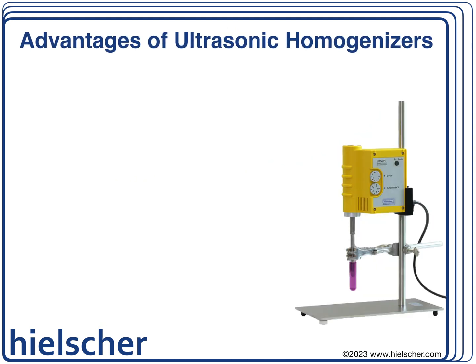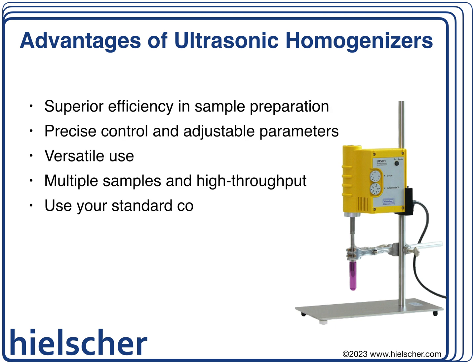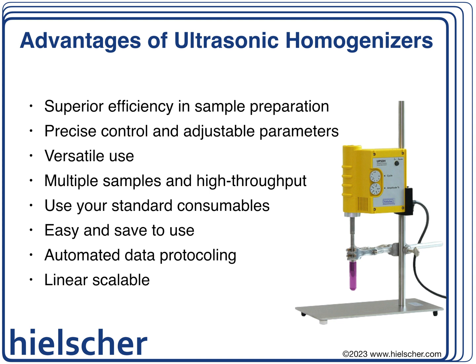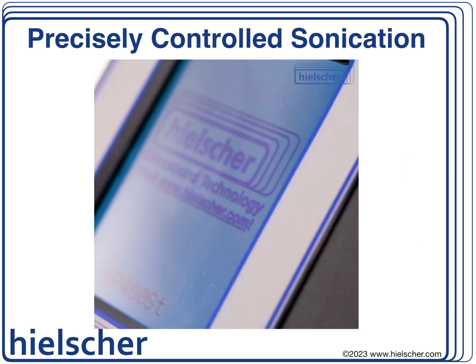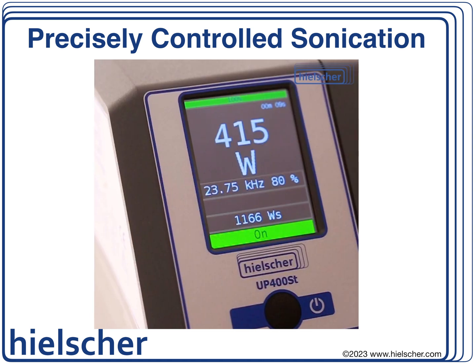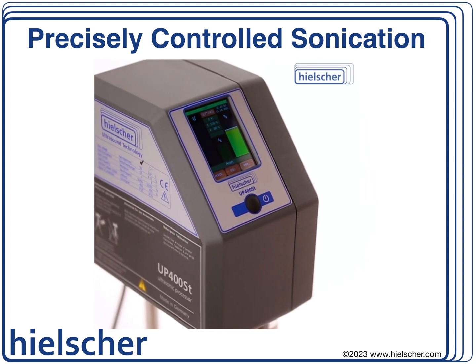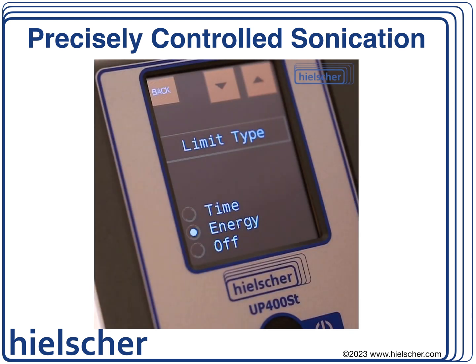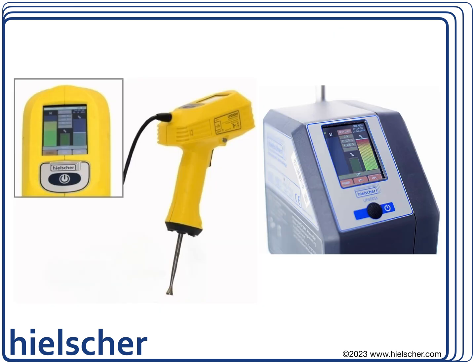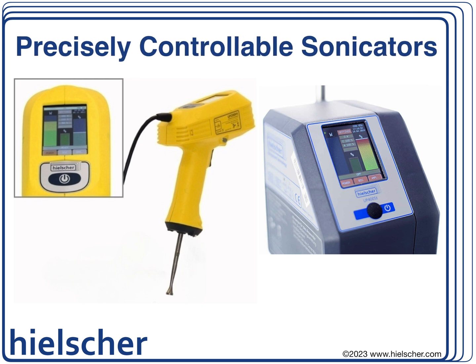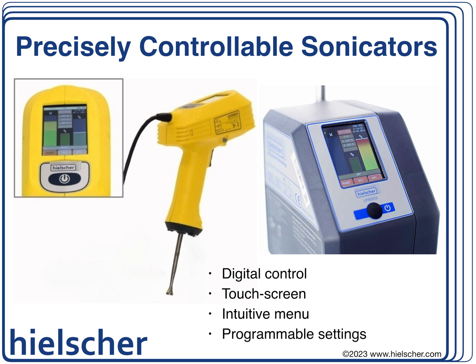In our exploration of sonicators, we've uncovered various models tailored to specific tasks in sample preparation. Ultrasonic tissue homogenizers and cell disruptors stand out for their unique advantages in lysis and protein isolation. Let's look at the key benefits: ultrasonic tissue homogenizers excel in efficiency, using high-frequency sound waves to swiftly break cell membranes and tissues, speeding up sample processing compared to traditional methods. All Heelscher sonicators feature precise controllability — critical ultrasonic parameters can be monitored and tailored to match the sample material.